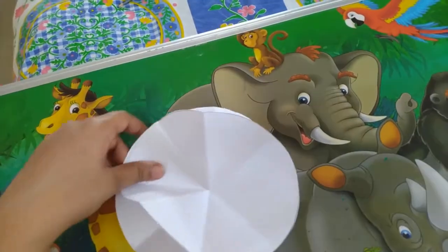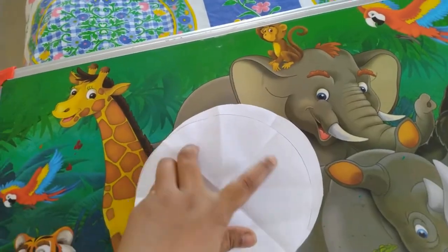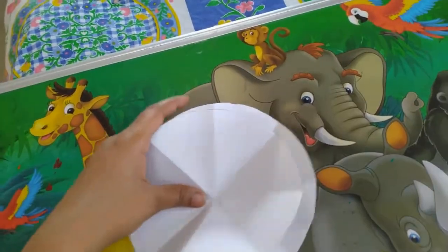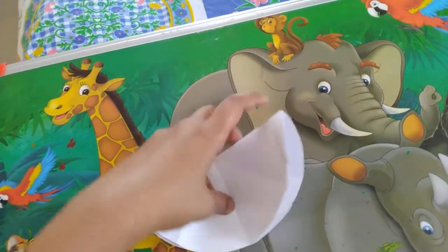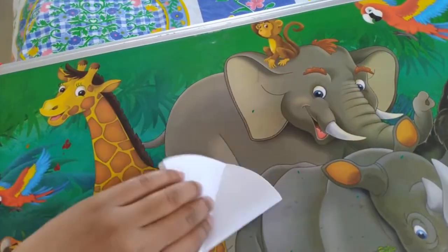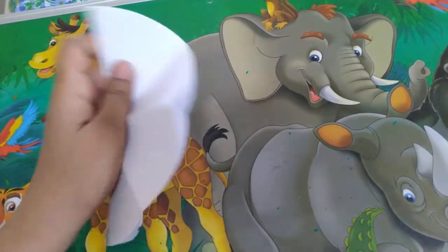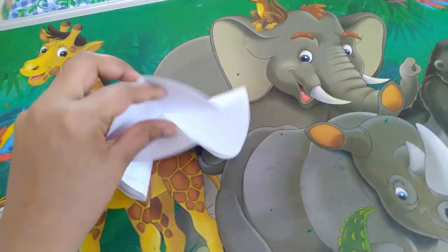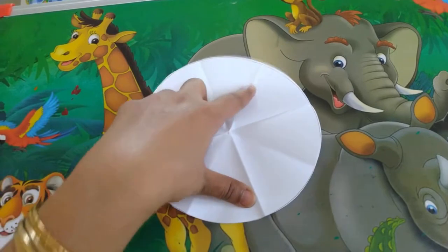I have folded them first in semicircle form, then again and then again like this. So I have these creases and on these creases I am going to mark the lines to make certain divisions.